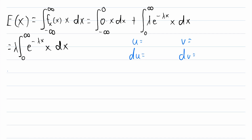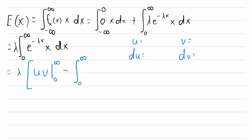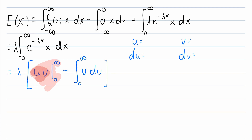Applying integration by parts, this integral equals lambda times u·v evaluated from 0 to infinity, minus the integral from 0 to infinity of v du. We want to make sure that v du is something we can integrate. One function will be differentiated and one will be integrated, and we want to end up with something simpler as v du.